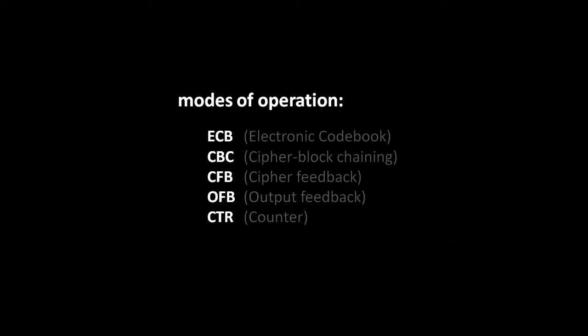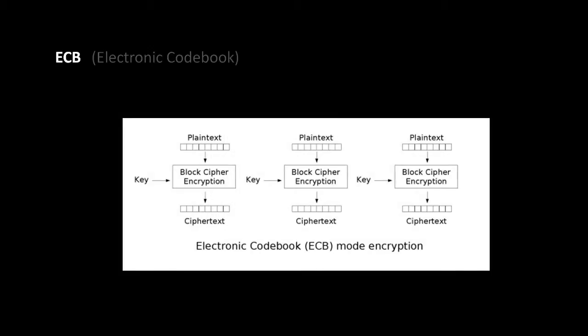To correct for these faults, we only use block ciphers with what are called modes of operation. There are several of these, including five we'll look at: Electronic Codebook or ECB, Cipher Block Chaining or CBC, Cipher Feedback or CFB, Output Feedback or OFB, and Counter, abbreviated as CTR. All of these, with the exception of ECB, allow for the secure use of a block cipher with a single key on a message longer than a single block. The strangely named Electronic Codebook mode is not secure, because it's the mode in which we do nothing special — we simply encrypt each block straight with the key.